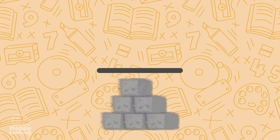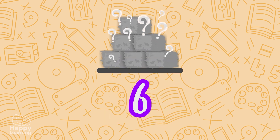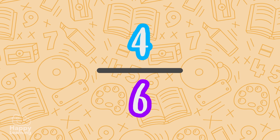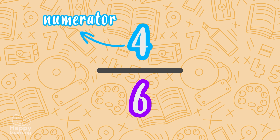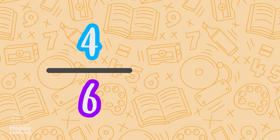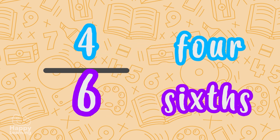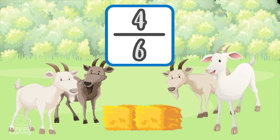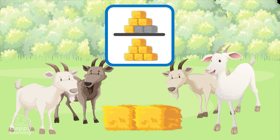Now we see how many of these six parts the goats have eaten — four! They're so greedy! We put that four at the top in the numerator. So we have a fraction of four-sixths. The goats have eaten four-sixths of the straw, because they have eaten four parts of the six into which we divided the straw.